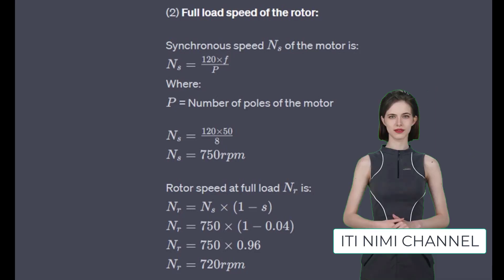To find the rotor's full load speed, we consider the slip. The formula is: rotor speed equals synchronous speed multiplied by (1 minus slip). This calculation gives us a rotor speed of 720 RPM.